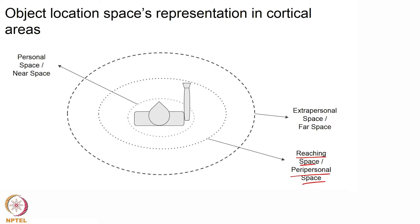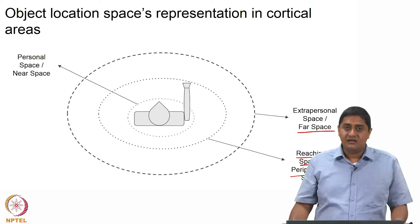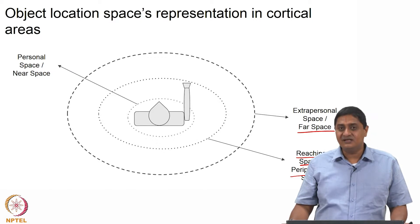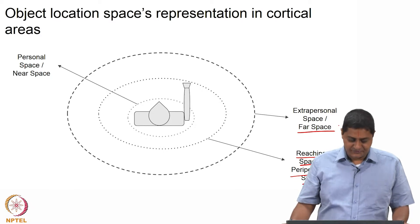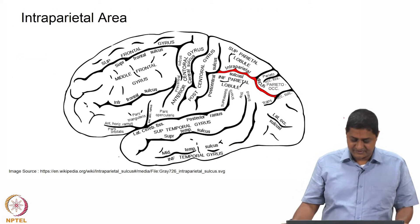The space that I can view but not necessarily reach without making leg movements — without actually taking a walk — is called far space or extrapersonal space. As mentioned, these maps are encoded in different regions, so there are independent maps of these three regions in different regions of the brain. That is something we discussed in the previous class.